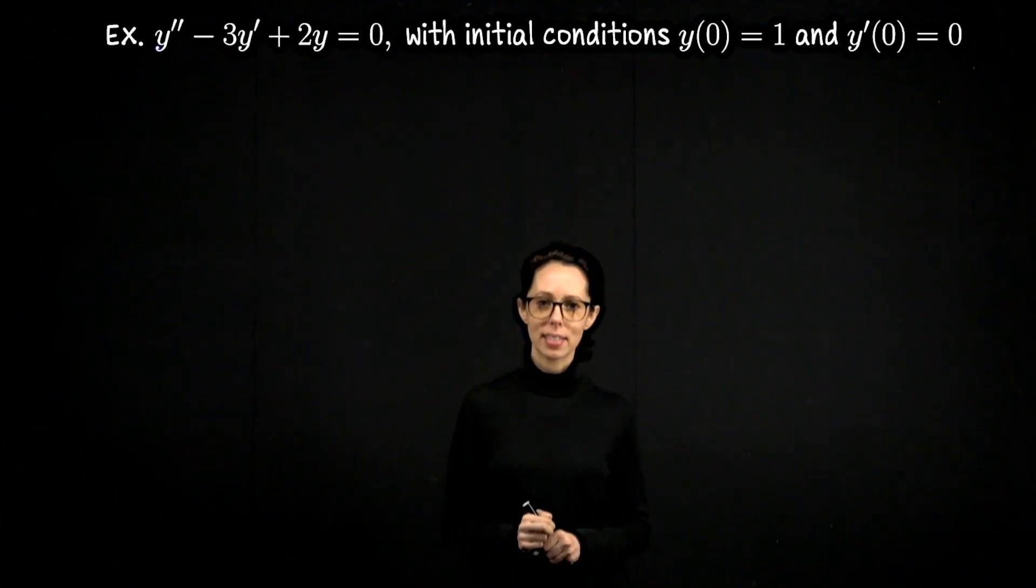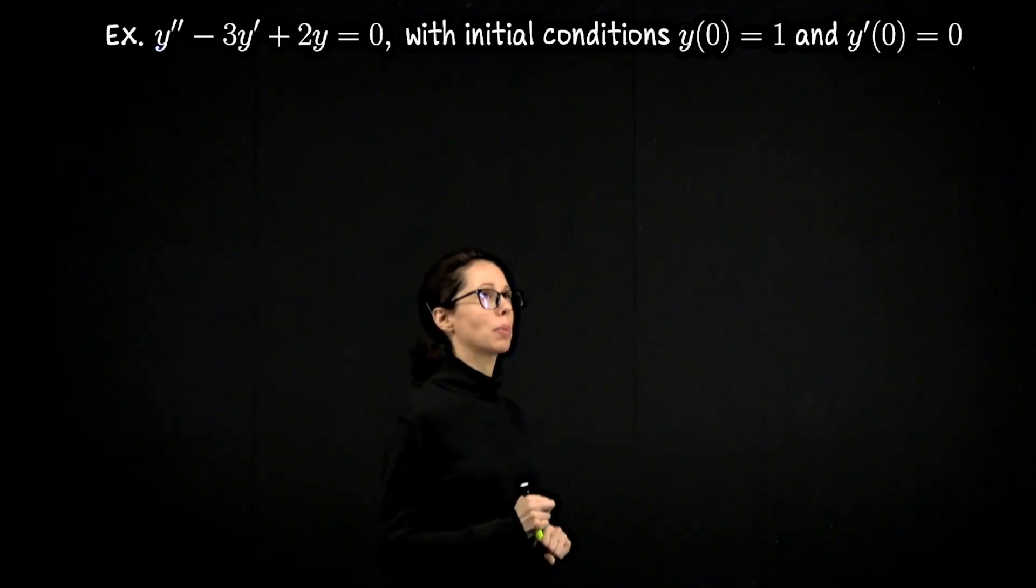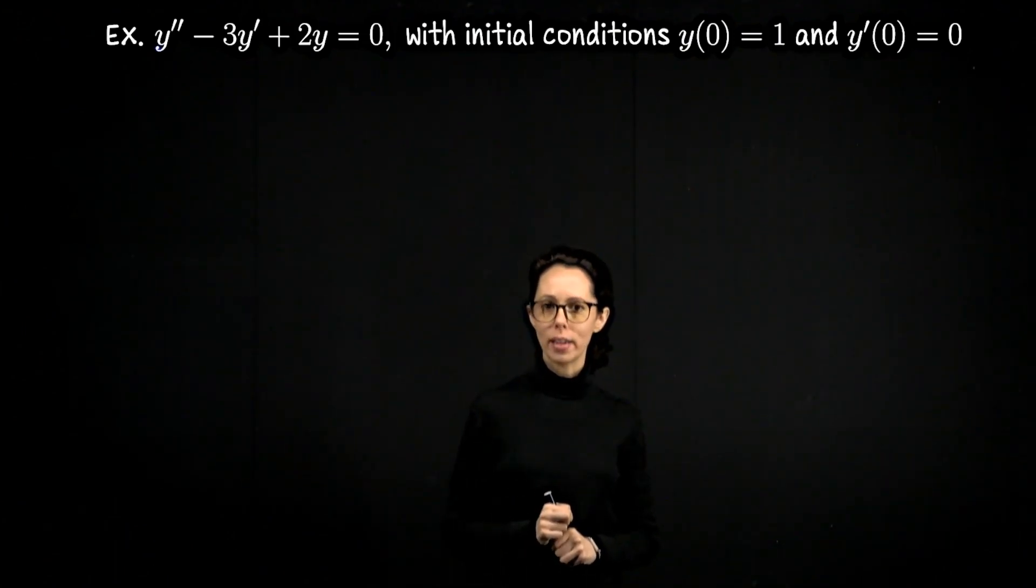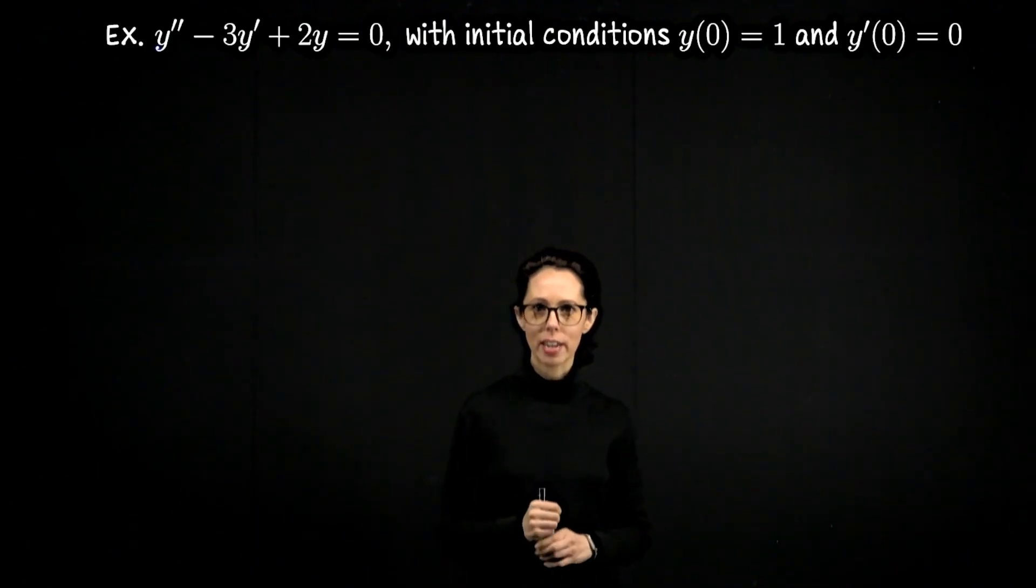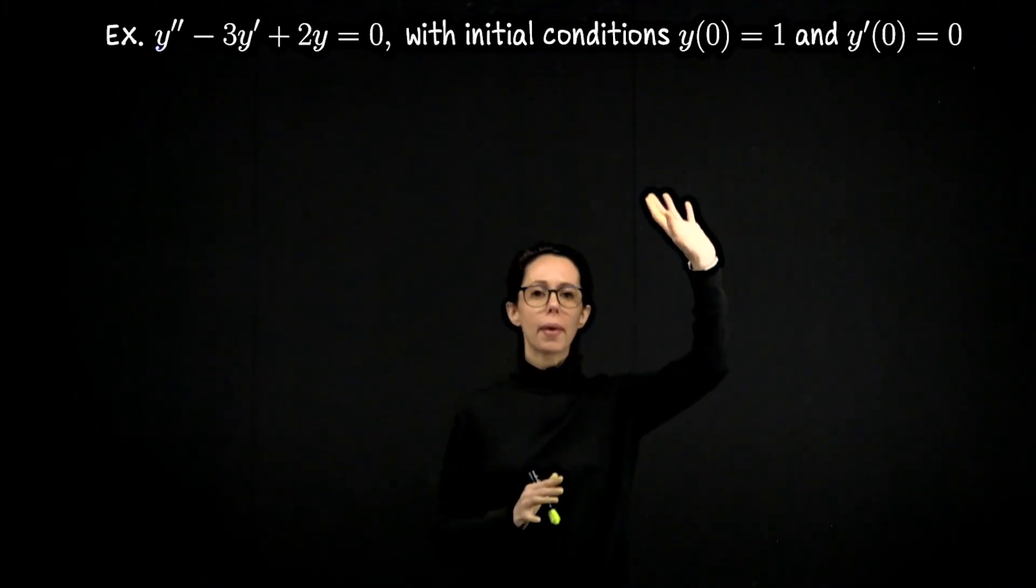Here's our example of this type of differential equation. Consider y double prime minus 3y prime plus 2y equals zero. We actually have an initial value problem here. So we are additionally told that when x equals zero, y is one. And when x equals zero, y prime is zero. That's going to lead us to find one particular function that satisfies this differential equation and makes those statements true. But let's worry about that a little later. Let's focus first on the characteristic equation, finding the roots and setting up the general solution.